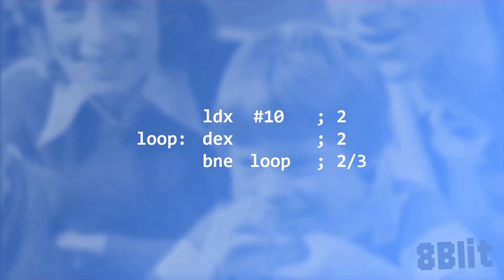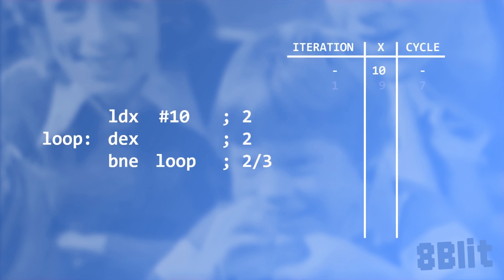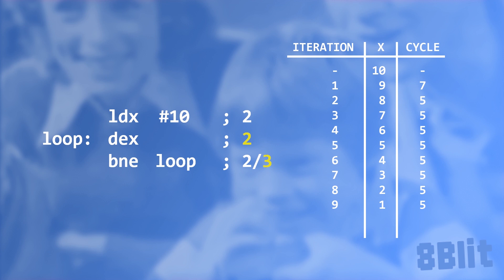If we follow this piece of code, it simply counts down from 10. The LoadX instruction takes two machine cycles to assign the immediate value 10 to the X register. Decrementing X takes two machine cycles to execute. Branch not equal takes two machine cycles if a branch is not taken, and three machine cycles if it is taken. The first iteration will use two to load the value 10 into X, two to decrement X, and then three to jump back up to our loop point, using up seven machine cycles. The second through ninth iterations will use two to decrement X and then three to jump back up to the loop point, using five machine cycles each loop, for a total of 40 machine cycles.